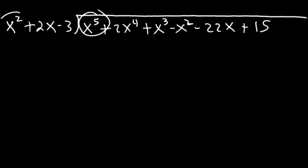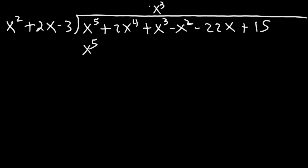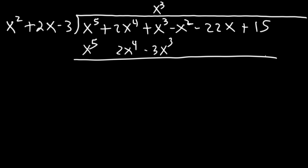Let's begin with division. x to the fifth divided by x squared: 5 minus 2 is 3, so that's x cubed. Multiply: x cubed times x squared is x to the fifth, and x cubed times 2x is 2x to the fourth, and x cubed times negative 3 is negative 3x cubed. Subtract by changing signs — those cancel, and x cubed plus 3x cubed gives 4x cubed. Bring everything else down.